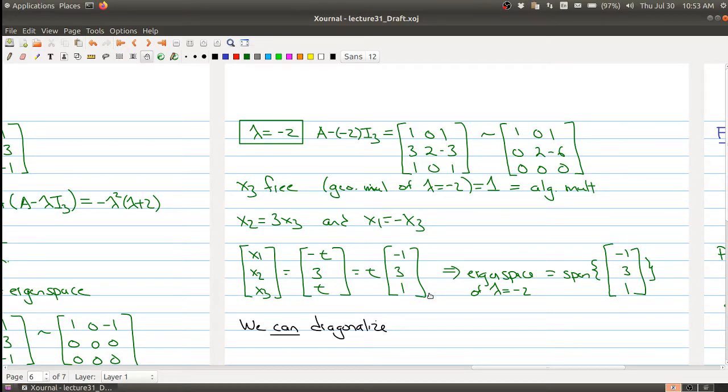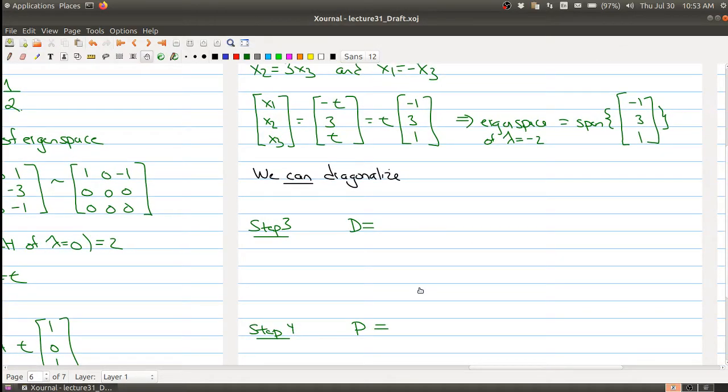We found a basis for all the eigenspaces, and now just to wrap up, the diagonalization is just putting all things into the correct spot. And here's the thing that we want to pay attention to.